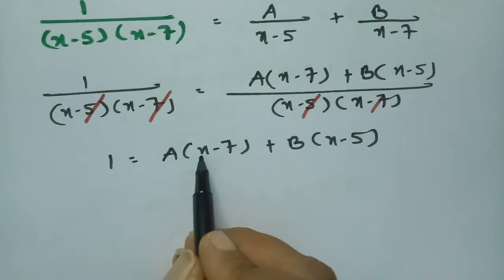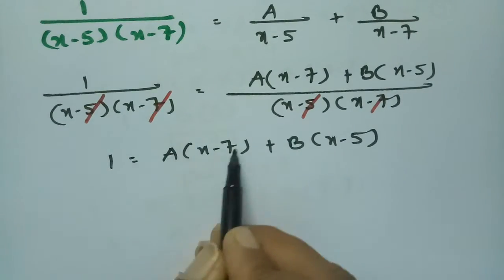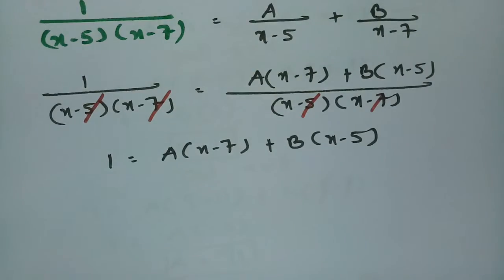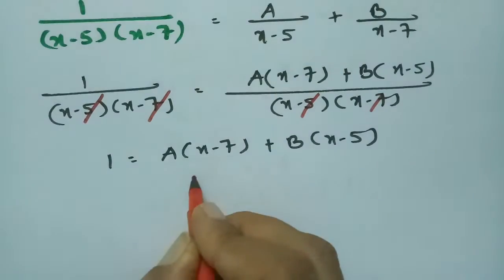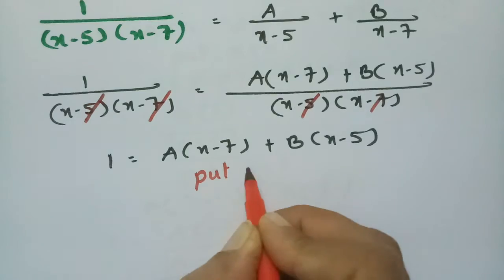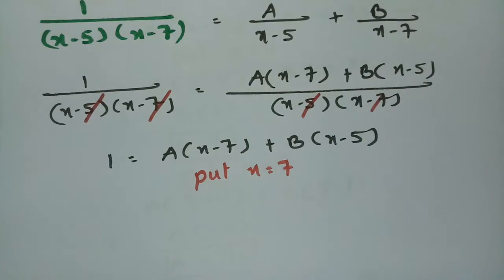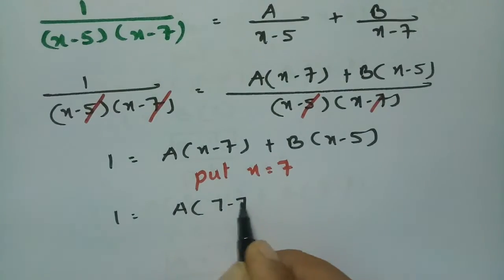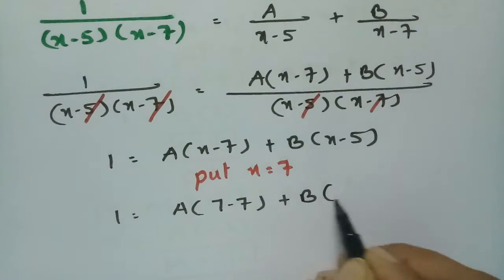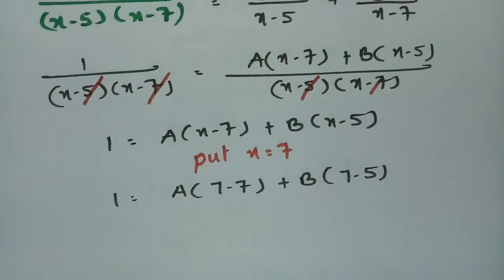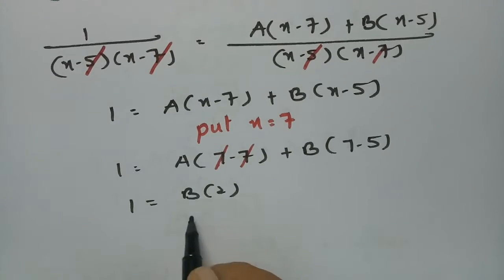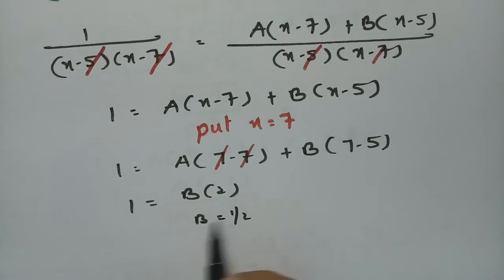In order to make the A term zero — there is minus 7 — so put x equal to 7: 1 = A(7 minus 7) + B(7 minus 5). Cancelling the A term: 1 = B times 2. Therefore, B = 1/2.